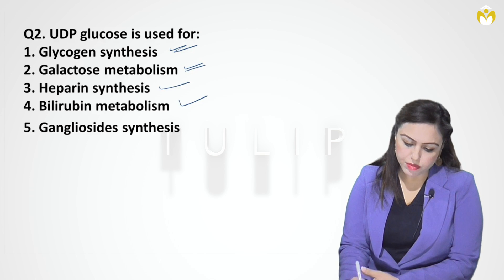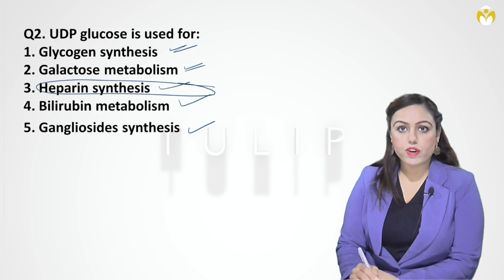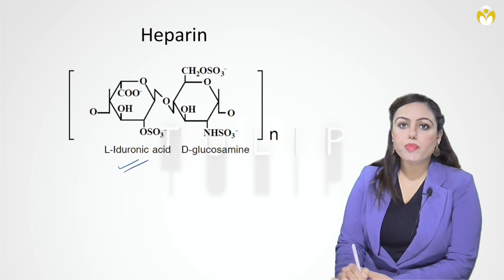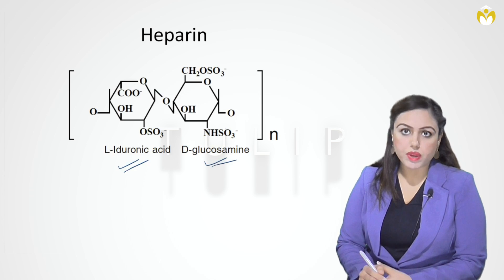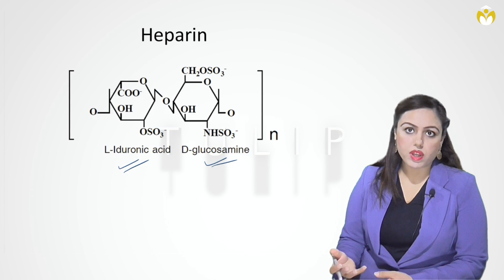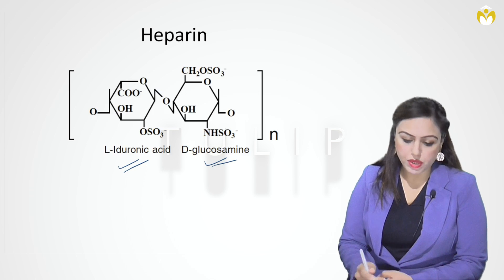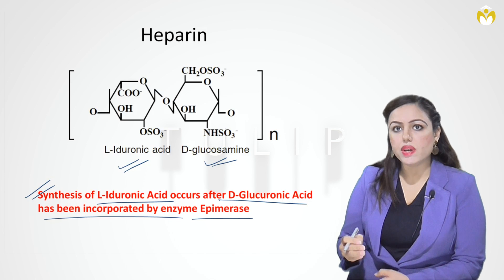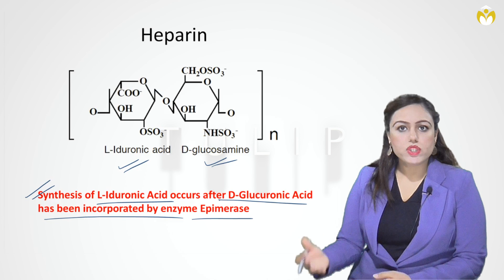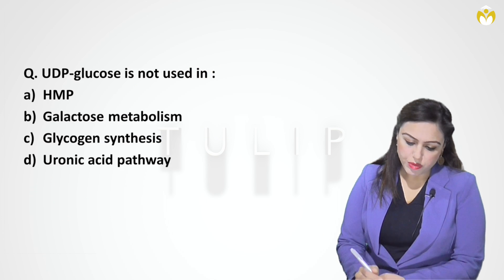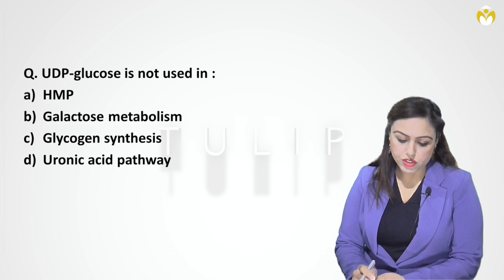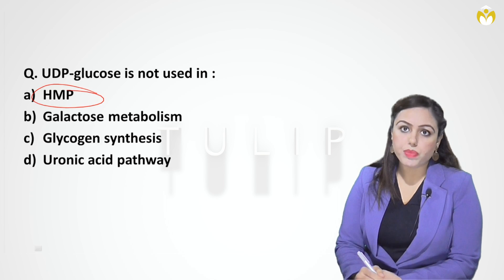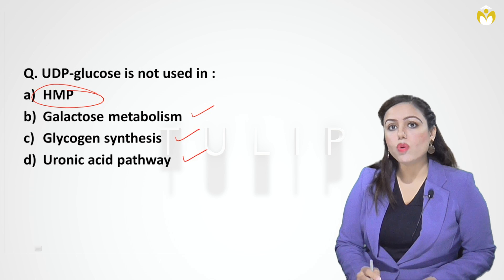For heparin synthesis, heparin is made of repeated units of L-iduronic acid and D-glucosamine. L-iduronic acid is obtained from D-glucuronic acid, which requires UDP glucose. D-glucuronic acid is converted to L-iduronic acid by the enzyme epimerase. Note: UDP glucose is NOT involved in the HMP (hexose monophosphate) pathway, but is involved in galactose metabolism, glycogen metabolism, and the uronic acid pathway.